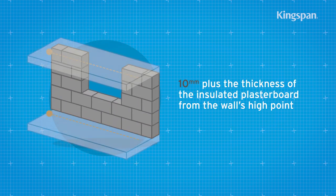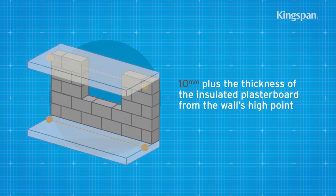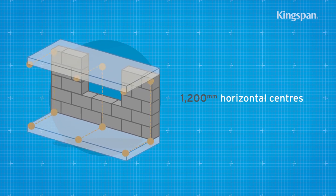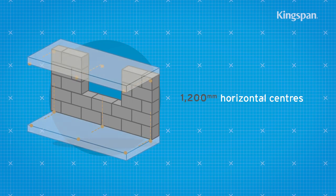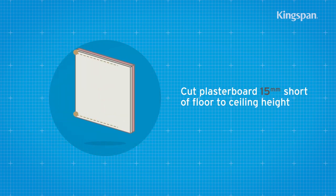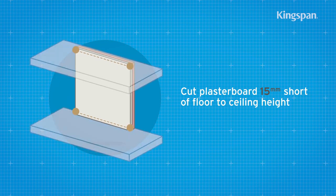Guidelines should be marked out at the floor and ceiling and around the wall at horizontal centers to indicate where edges of the insulated plasterboard should finish. Cut the insulated plasterboard approximately 15 mm short of the floor to ceiling height.